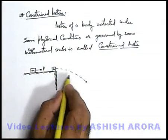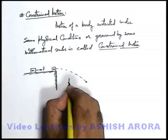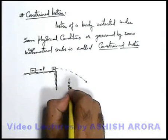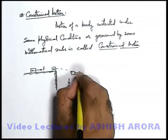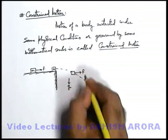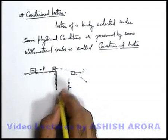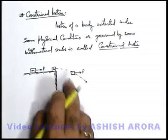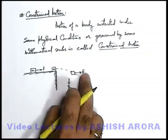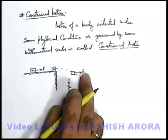Then onward, it is falling freely under gravity — the force may continue to act on it. So this is a motion which is constrained under the action of gravity and the external force.